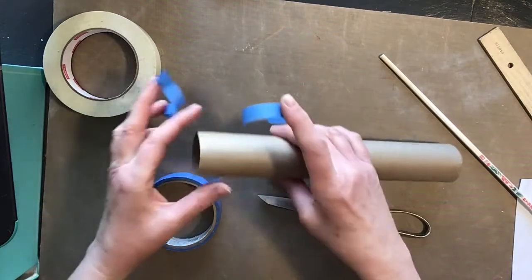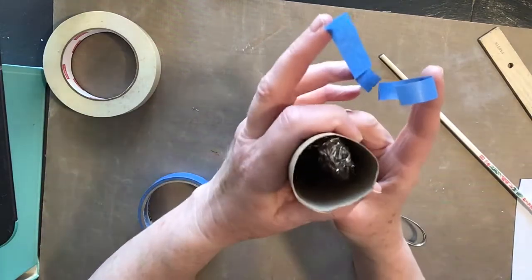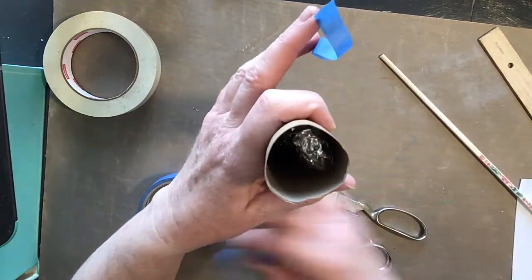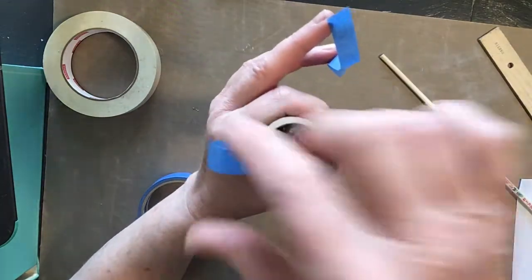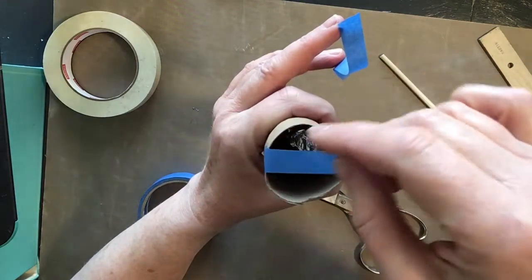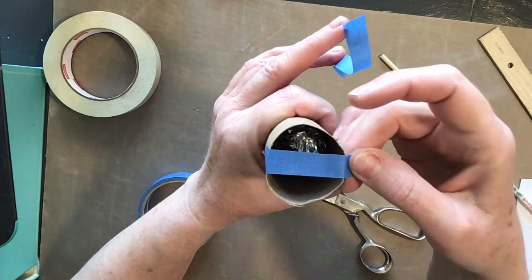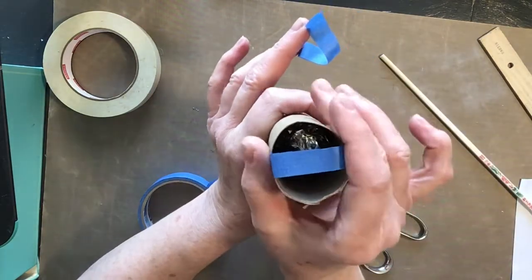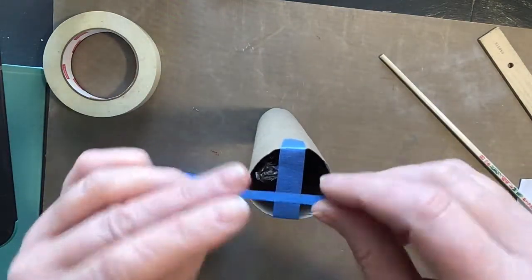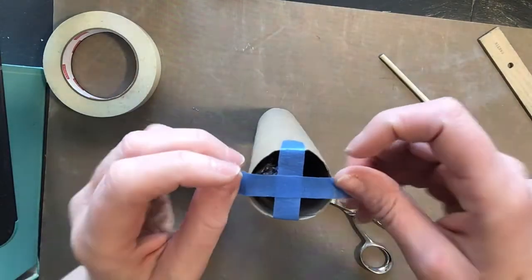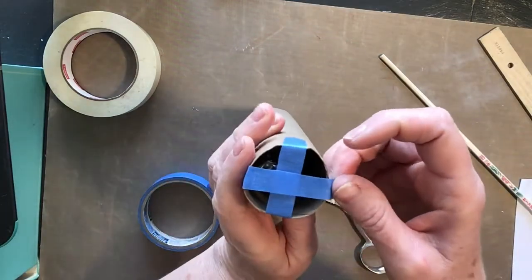I don't put a wide piece on here because it won't lay down very well. This is a circular shape and you don't want the tape sticking up in weird places. You want it to lay flat. So I'm just going to make a crisscross like that.